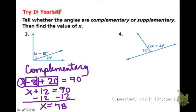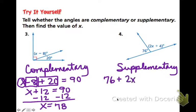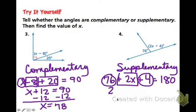When we look at number 4, the two adjacent angles form a straight line, which is a straight angle, or 180. So we will say that they are supplementary. And then we'll write an equation. 76 plus 2x plus 4 is equal to 180.